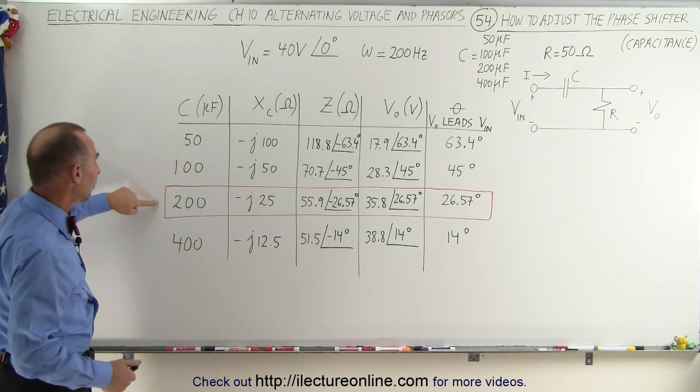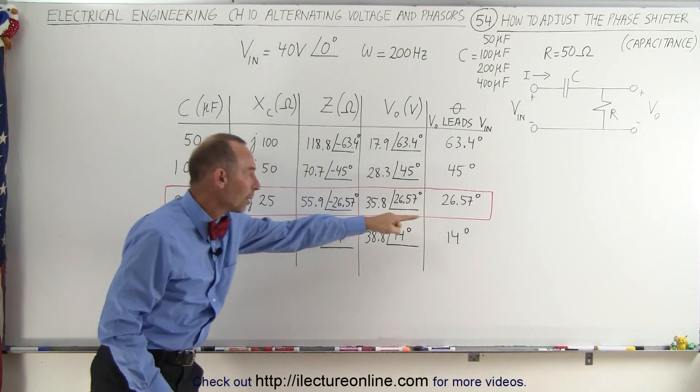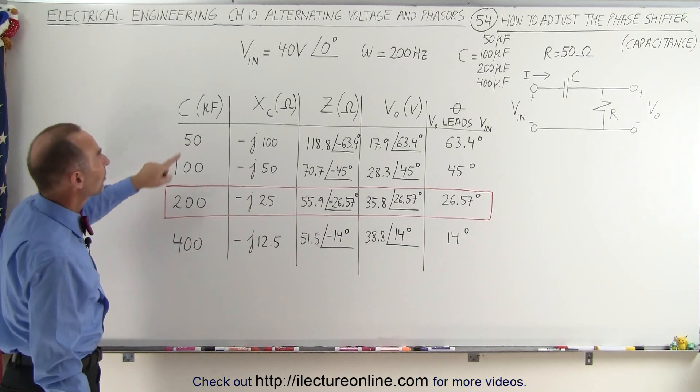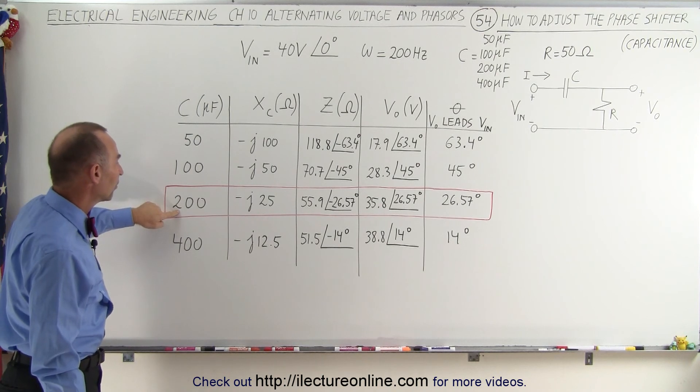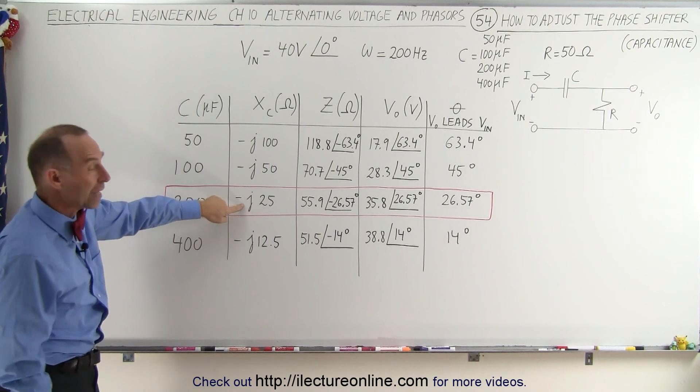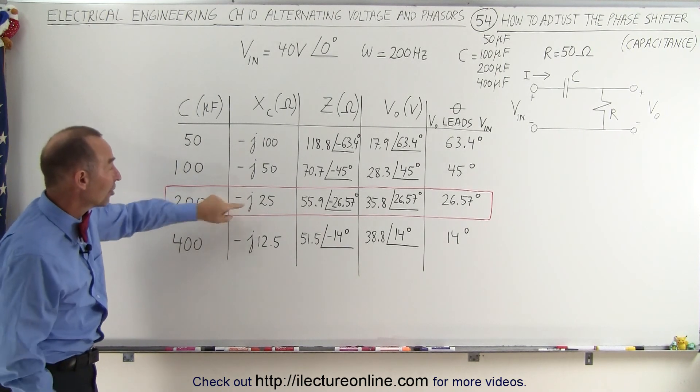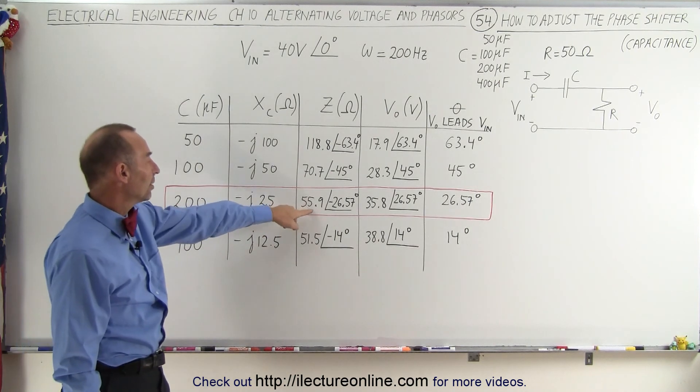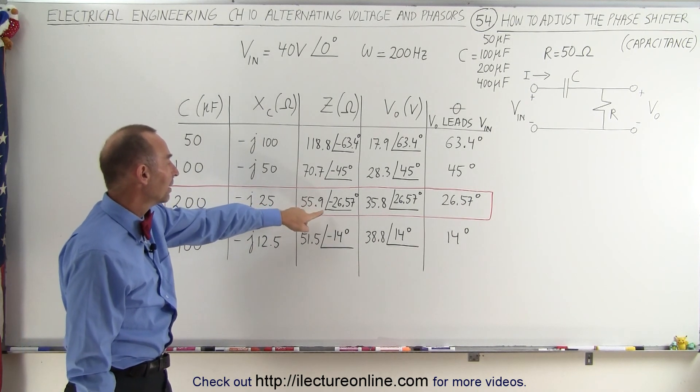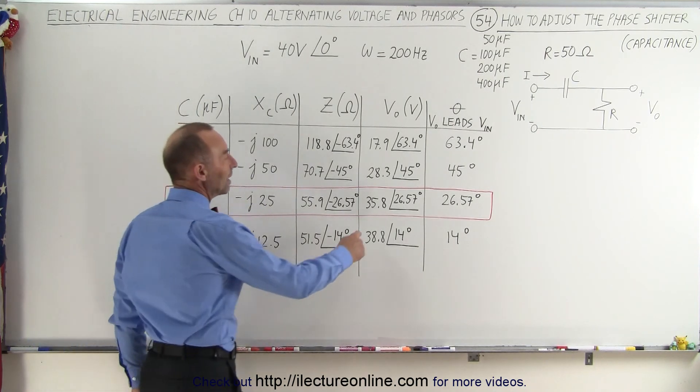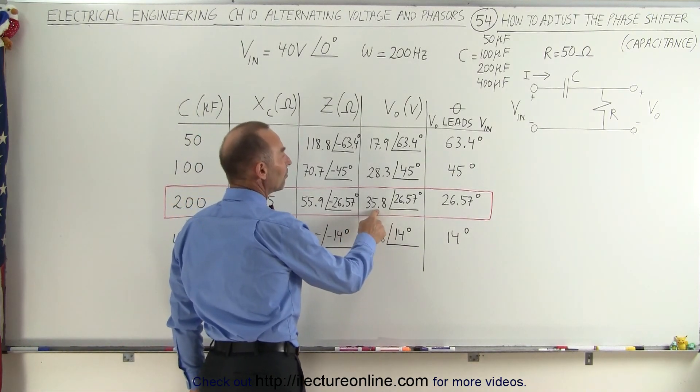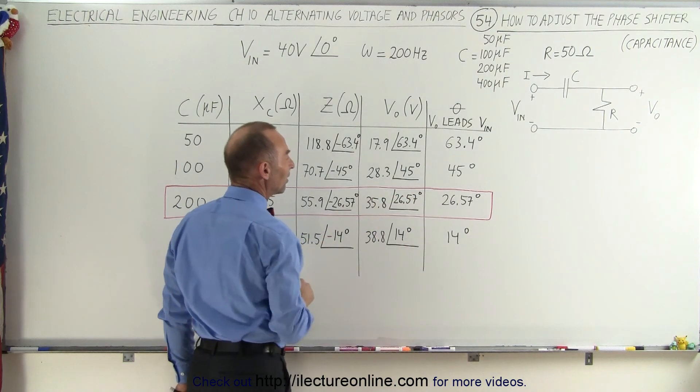Notice that this was the example that we showed you a couple videos ago where we had an input frequency of 200 hertz and a capacitor of 200 microfarads. And so we had a capacitor reactance of minus 25 J and then we had an impedance of 55.9 with a phase shift of minus 26 and that resulted in a voltage of 35.8 volts with a phase shift of 26 and a half degrees.